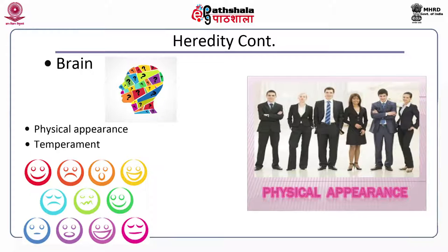Number two is physical appearance. A person's outer look plays a vital role in his personality. His dressing sense, body gestures, way of sitting, way of standing, understanding level, and level of confidence are all means through which his personality is reflected. Number three is temperament. Temperament and other non-intellectual personality traits are distributed according to the normal distribution. Temperament is the degree to which one responds emotionally.